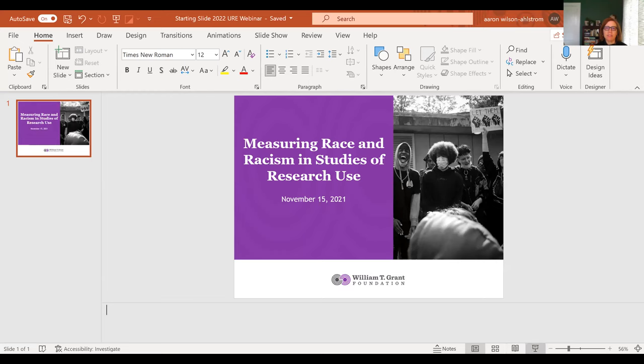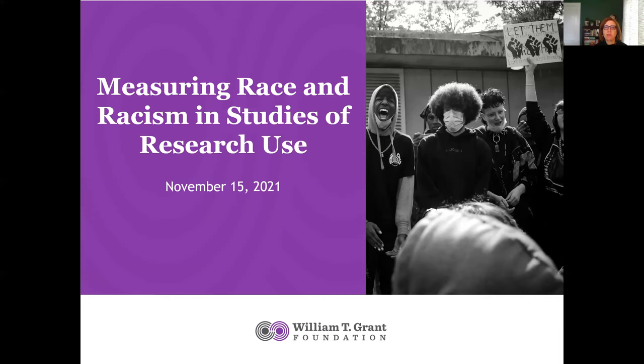This series was launched because we recognized that scholarship on evidence use — a still young but growing interdisciplinary field — was generating rich and important studies, but most were relatively silent on how race and racism shape what research is used, whose research is used, and how research is used. Previous webinars have addressed how race and racism infuse the production and use of research, as well as how the use of research is inevitably shaped by power and politics.